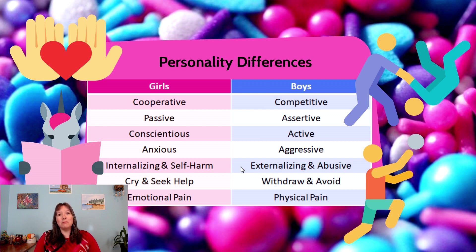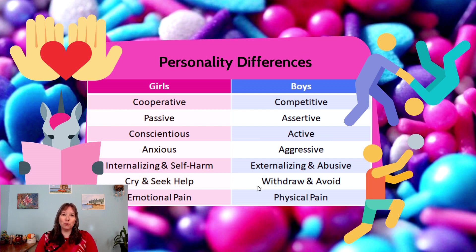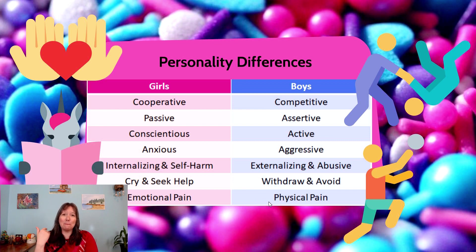When boys and girls experience major mental health crises like major depressive disorder, depression tends to appear in very gendered ways. Girls and women experiencing depression are more likely to cry and seek help, whereas boys are more likely to withdraw, avoid, and show unexplained absenteeism — not showing up to work or school and not returning calls. Girls are more likely to express emotional pain when upset, while boys are more likely to report body aches — men with depression often experience significant physical aches rather than emotional pain.